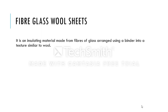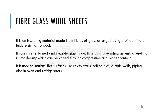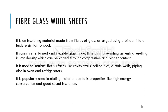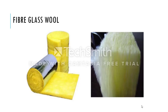Fiber glass wool sheets are an insulating material made from fibers of glass arranged using a binder into a texture similar to wool. It consists of intertwined and flexible glass fibers. It helps in preventing air entry, resulting in low density which can be varied through compression and binder content. It is used to insulate flat surfaces like cavity walls, ceiling tiles, curtain walls, piping, and also in ovens and refrigerators. It is popularly used due to its properties like high energy conservation and good sound insulation, and is widely used in process industries, residential buildings, and air conditioning.